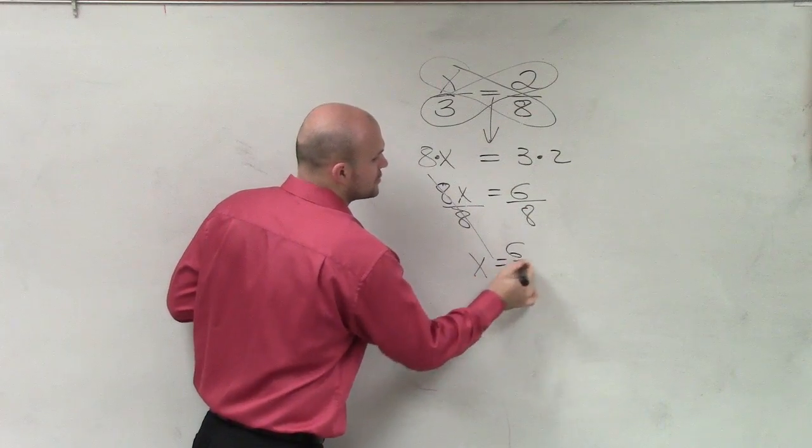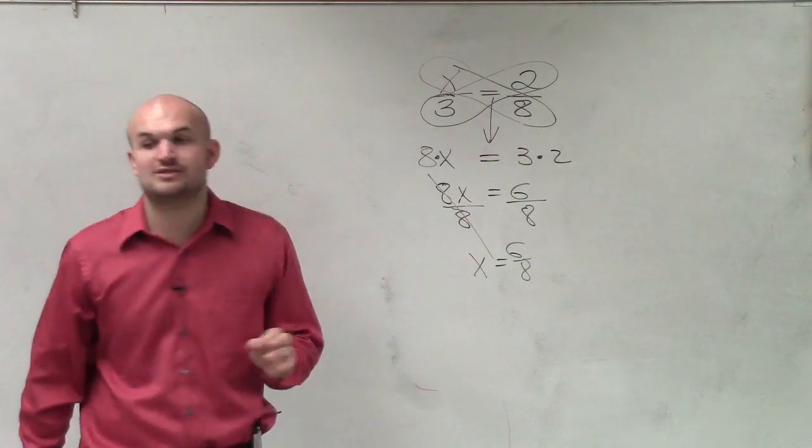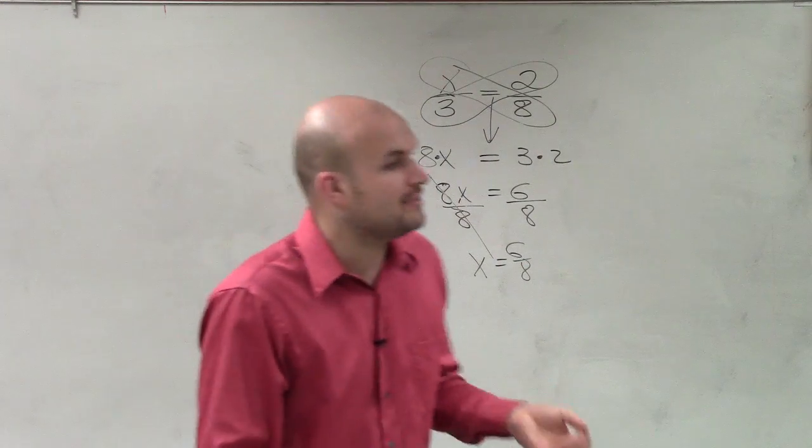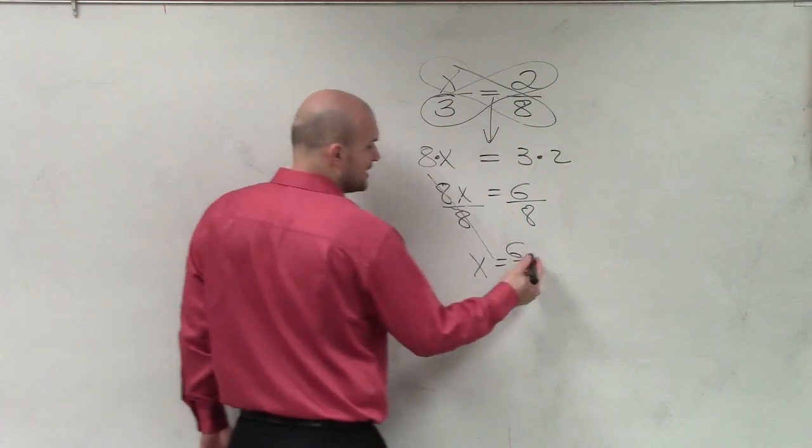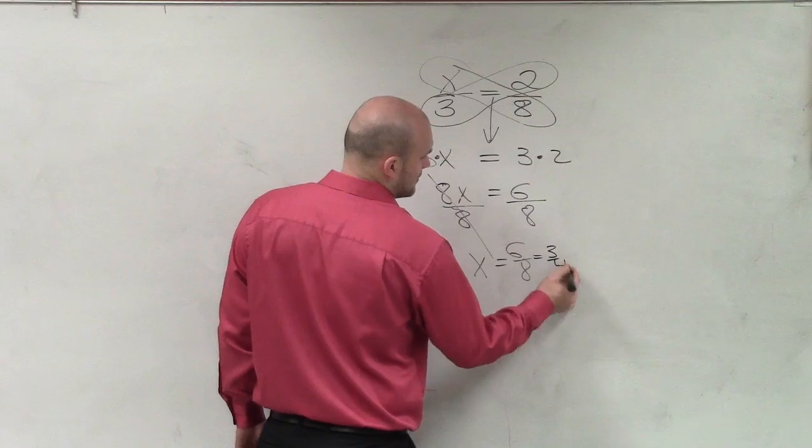So I have x equals 6 over 8, but ladies and gentlemen, as I mentioned when we talked about a ratio, we want to make sure we can simplify that ratio. So therefore, I can divide the top and bottom by 2, and I get 3 fourths.